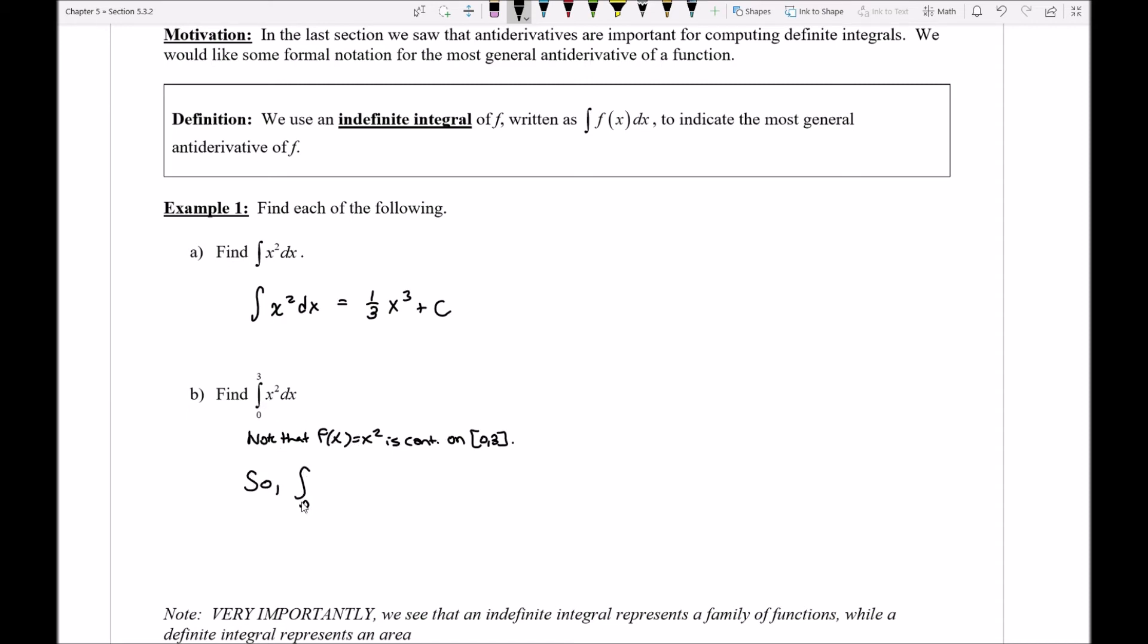So I can now state that this definite integral is going to be equal to 1 third x to the third, and I'll evaluate that from 0 to 3. So I'm going to get 1 third times 3 to the third power minus 1 third times 0 to the third power. So this is going to be 27 over 3, which is 9, and 9 minus 0, so here I get a final answer of 9.